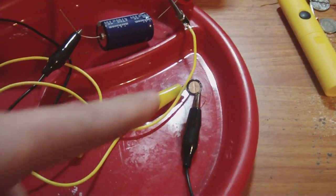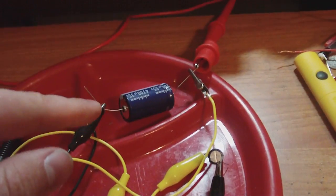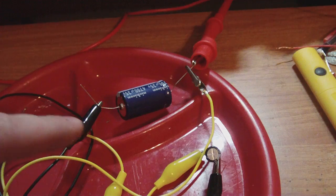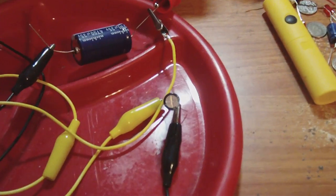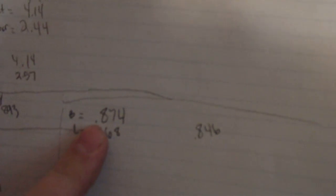I hooked them up with positive of the little one going to the positive of the big one, the negative of the big one going to the negative of the little one. And I got the numbers right here. B is for big, so the big one had 0.874 volts and that was a standing voltage I had sitting there overnight. The little one had 0.168 and that also was standing voltage sitting overnight.